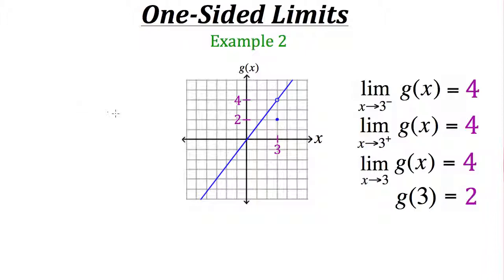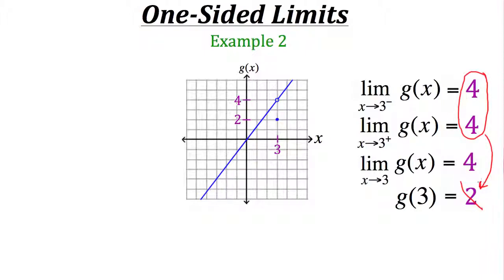To determine if g is continuous at x equals 3, our one-sided limits need to be the same, and they also need to match the output when x equals 3. Our one-sided limits are 4, but the output is 2 — they are not the same. So in this case, we say the function is not continuous at x equals 3.